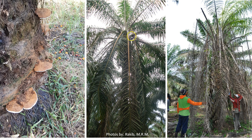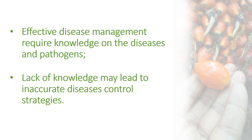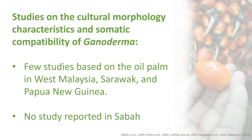Skirting symptom and severe skirting symptom — most of the fronds are already damaged. For effective disease management, knowledge of the disease and the pathogen is required. Lack of knowledge may lead to inaccurate disease control strategies. Many studies have been conducted in West Malaysia, but none have reported the situation in Sabah, which is one of the leading producers. There are few studies on cultural morphology and somatic compatibility of Ganoderma from oil palm in West Malaysia, Sarawak, and Papua New Guinea, but no published reports in Sabah.